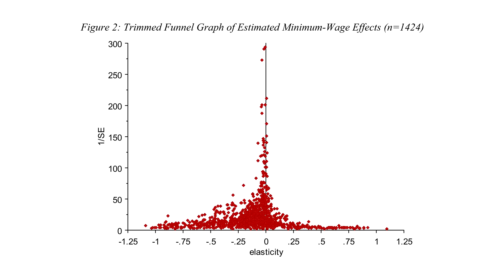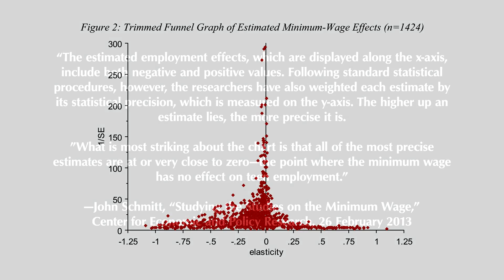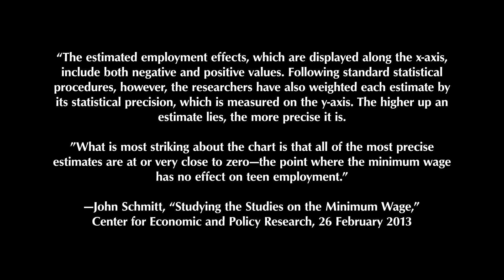Here's a graph that proponents of minimum wage pseudoscience keep throwing my way. It's yet another study purporting to show that there are no disemployment effects of the minimum wage. I've covered this at length in other videos. I'm going to focus on this graph because it's what the minimum wage proponents keep throwing around, like John Schmidt of the Center for Economic and Policy Research, who said that the estimated employment effects, displayed along the x-axis, include both negative and positive values.